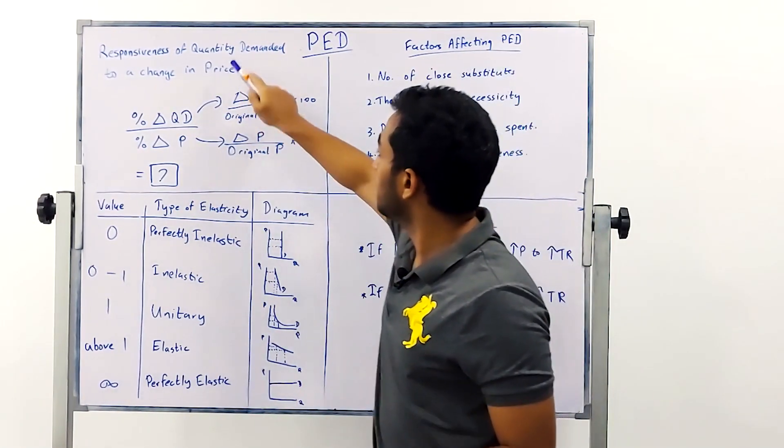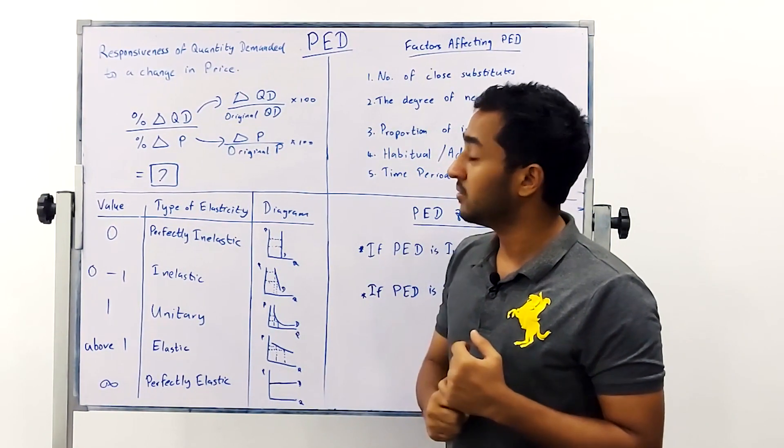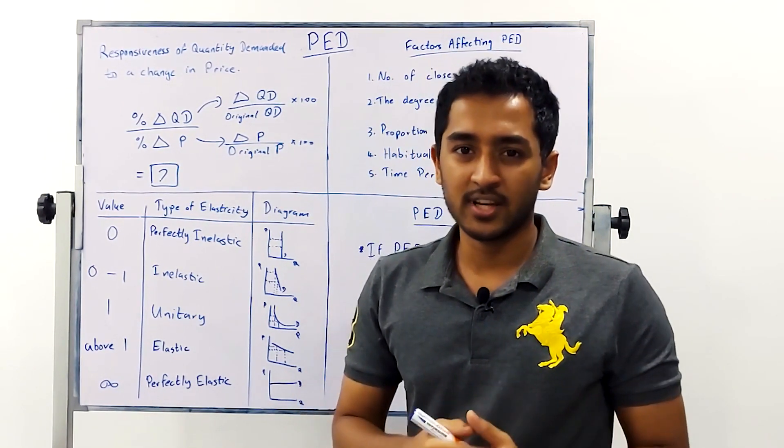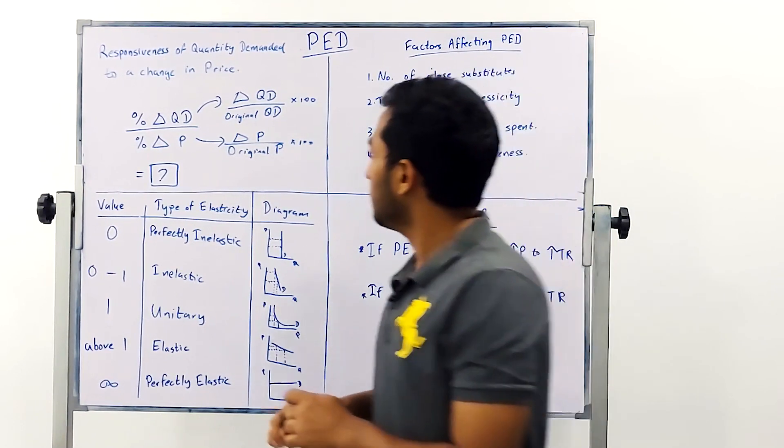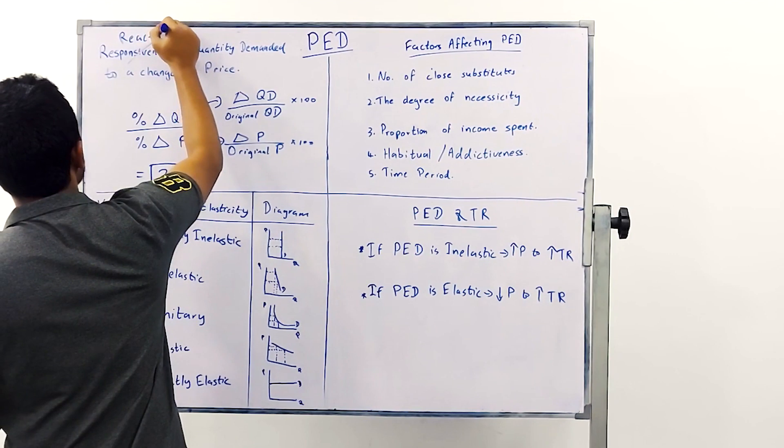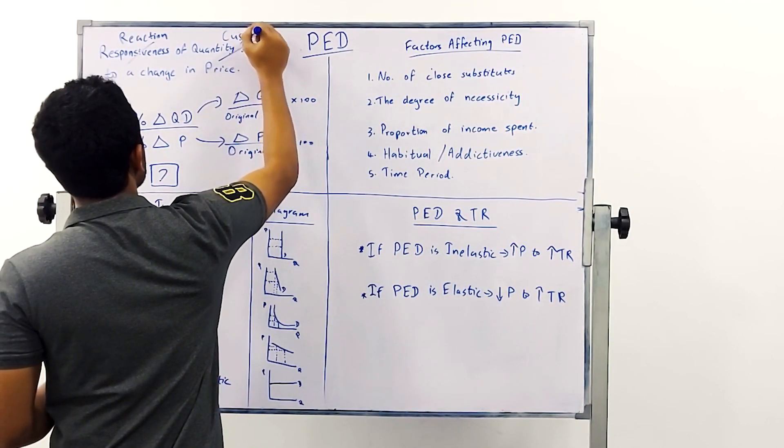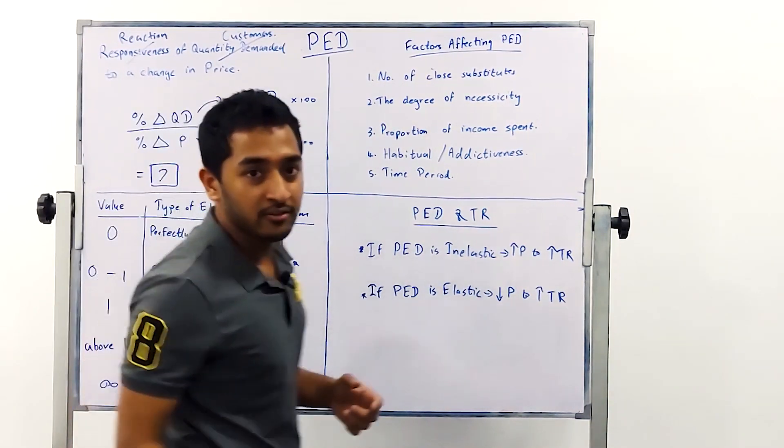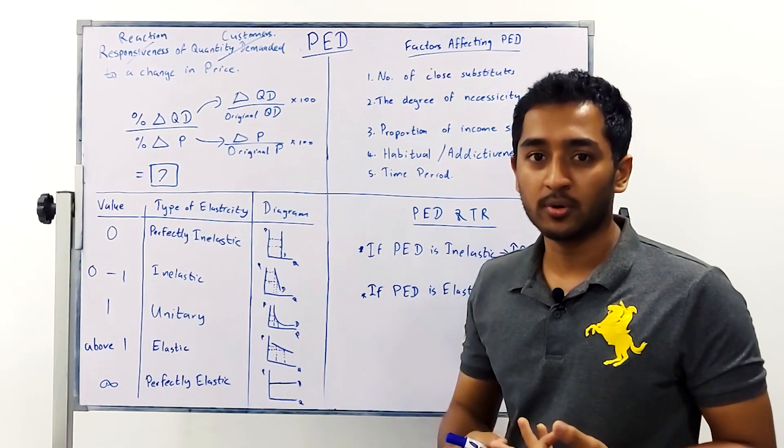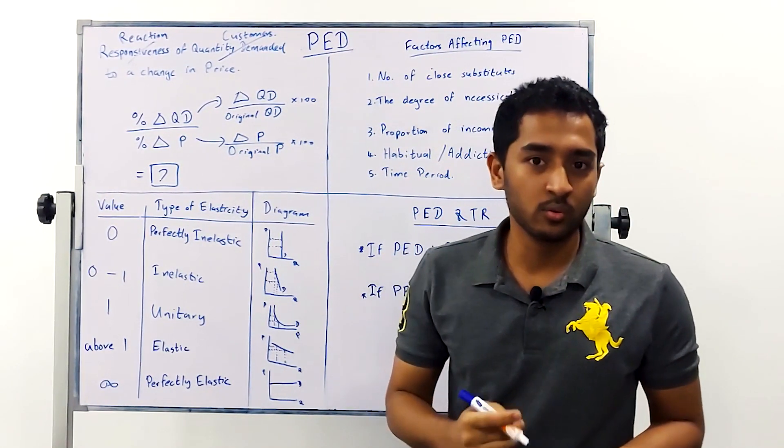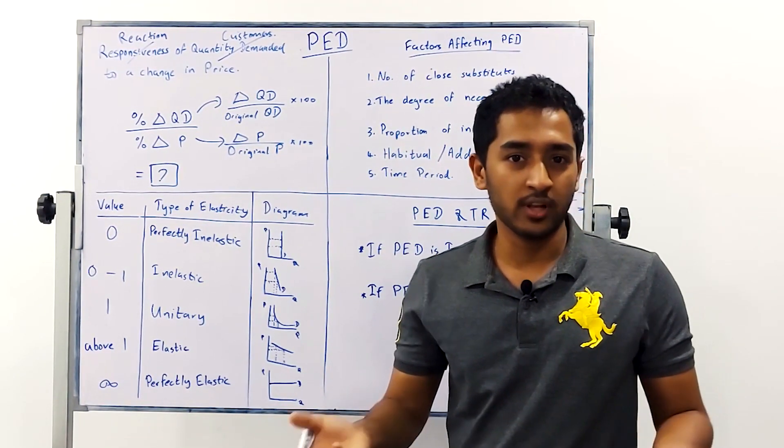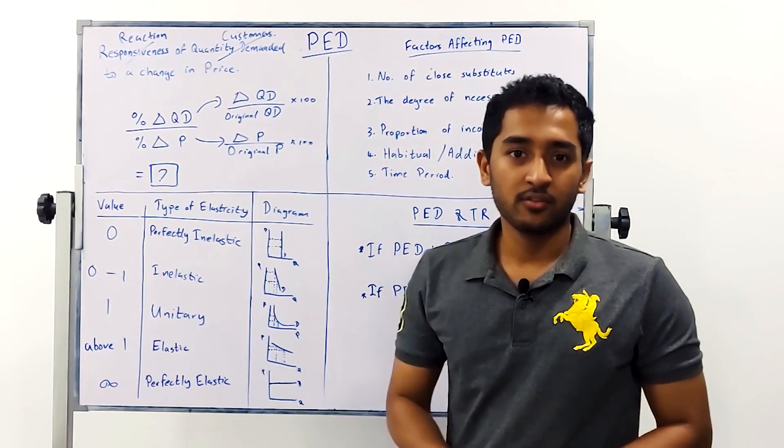It is your responsiveness of quantity demanded to a change in price. Well what does that really mean? Let's try to make it a little easier so you can understand. I'm going to modify this definition. If I were to change responsiveness to reaction and quantity demanded to customers, let's try reading that again: the reaction of customers when you change your price. Will your customers leave you when you raise your price or will they continue to buy from you? Will a small proportion leave you or a large proportion leave you? Let's figure it out.